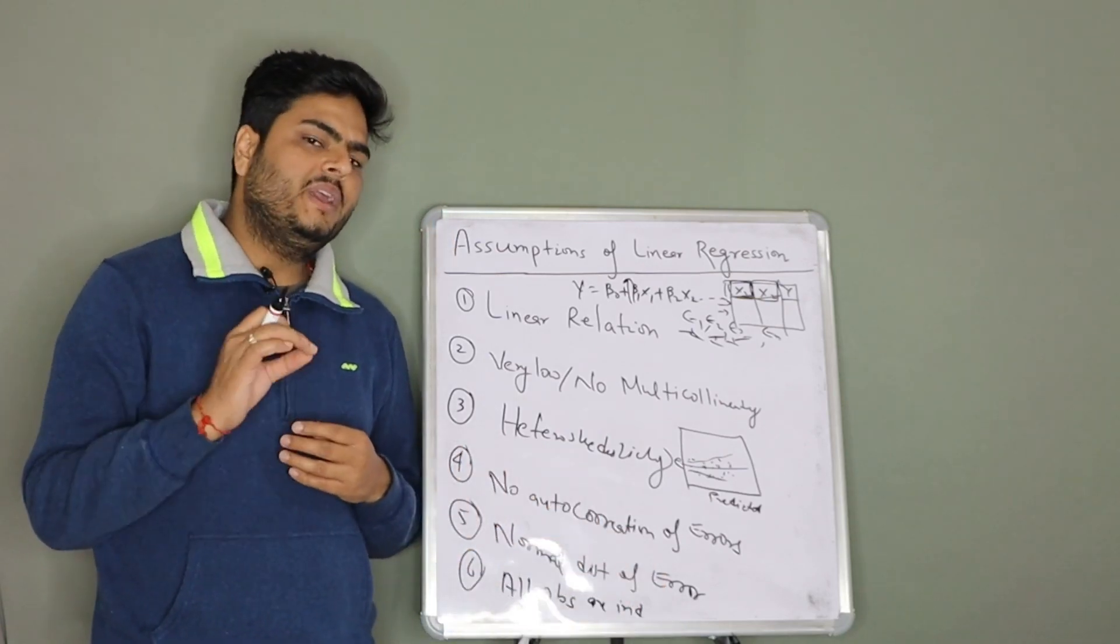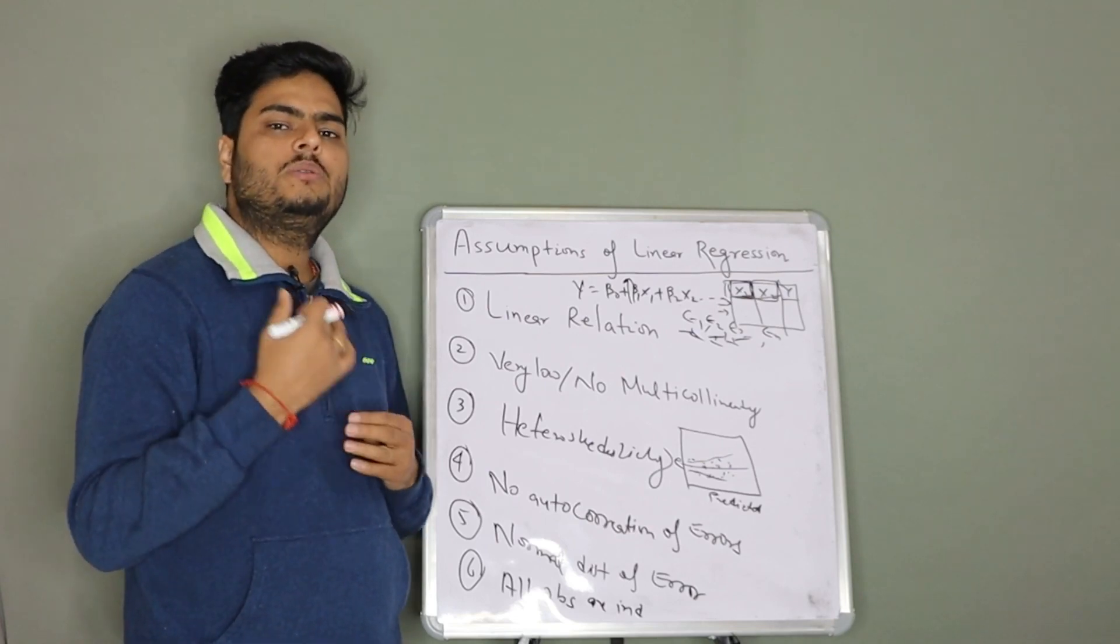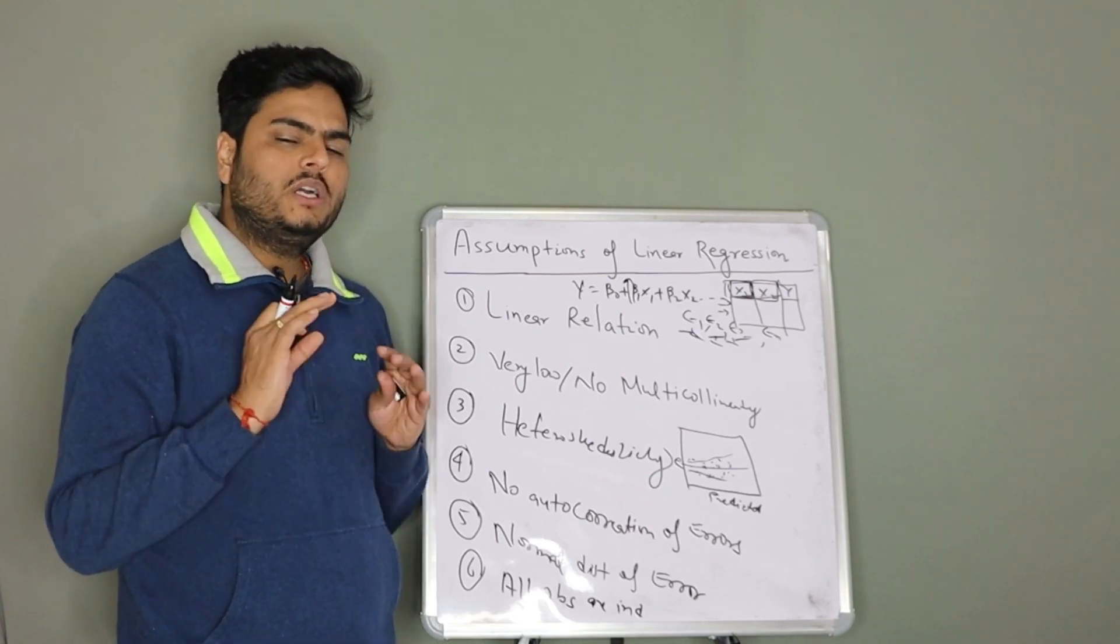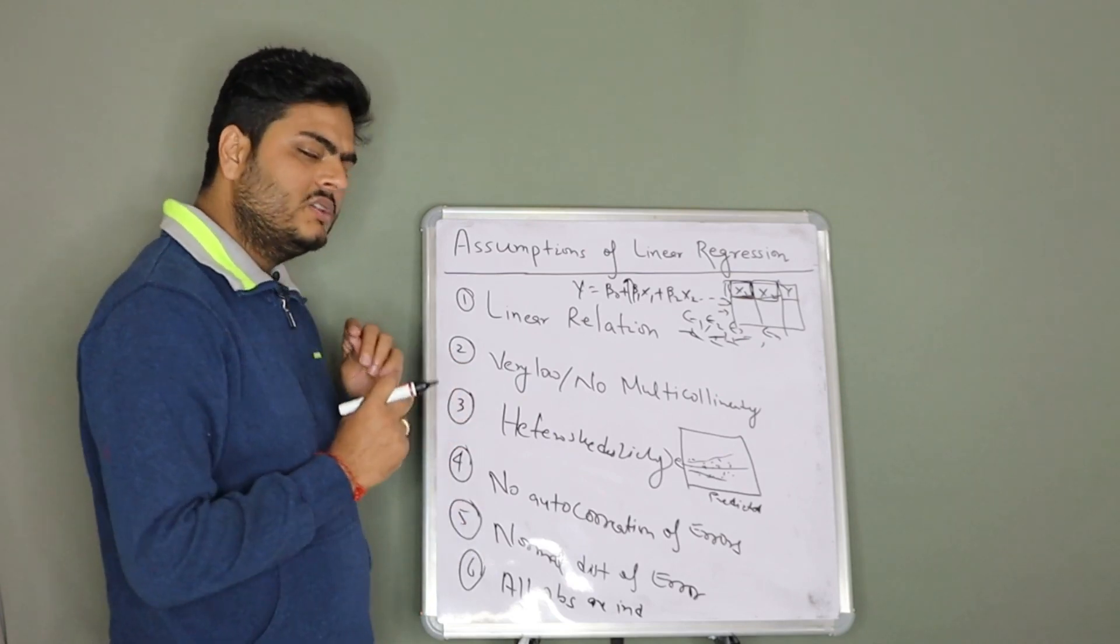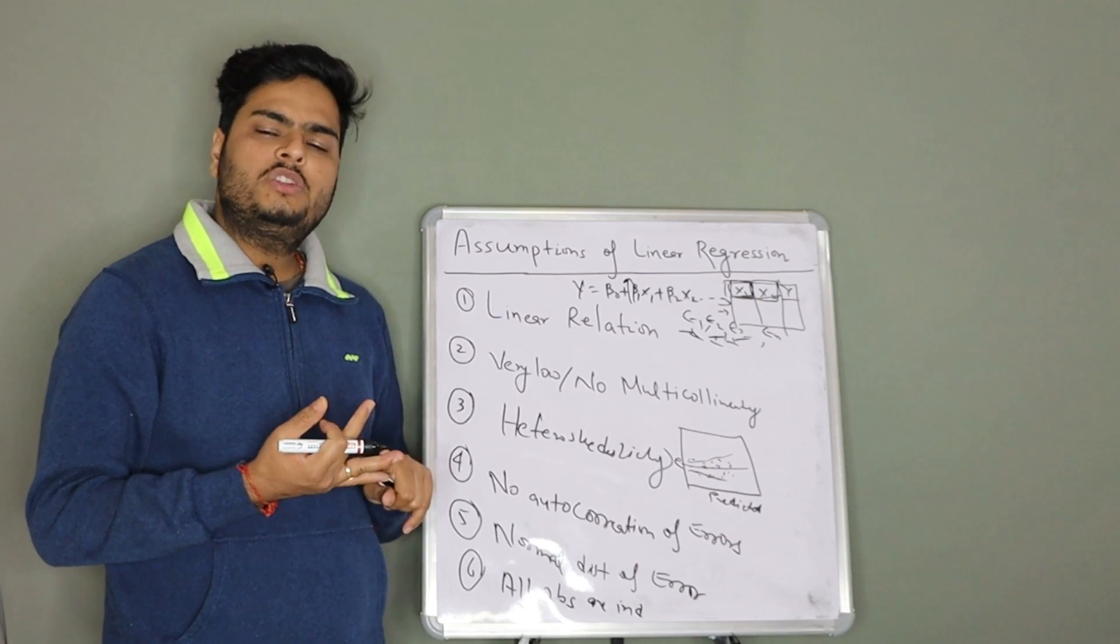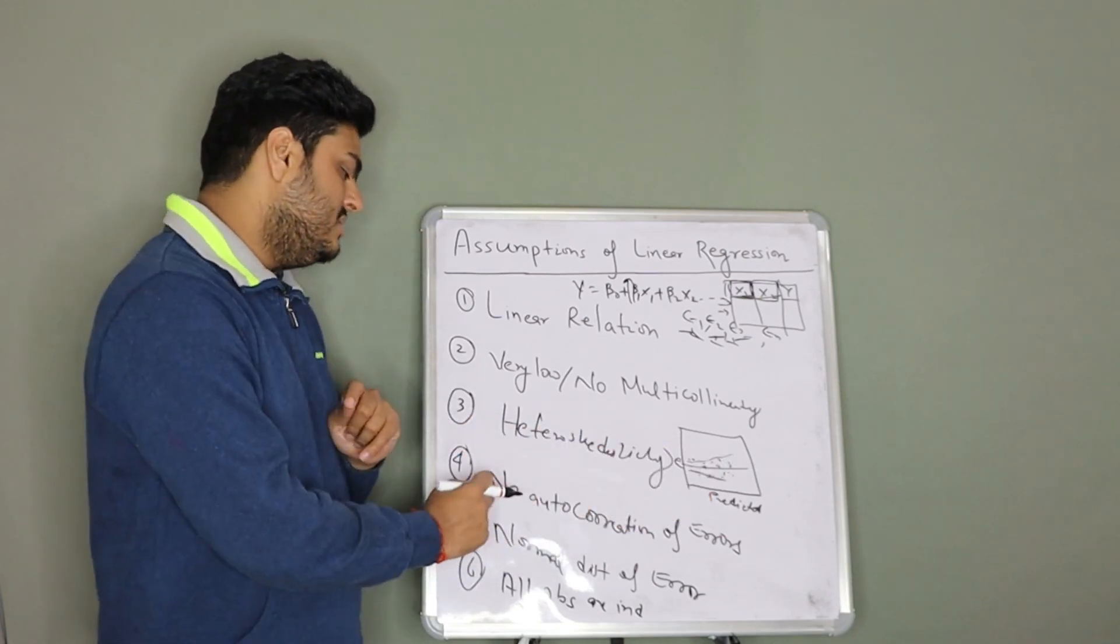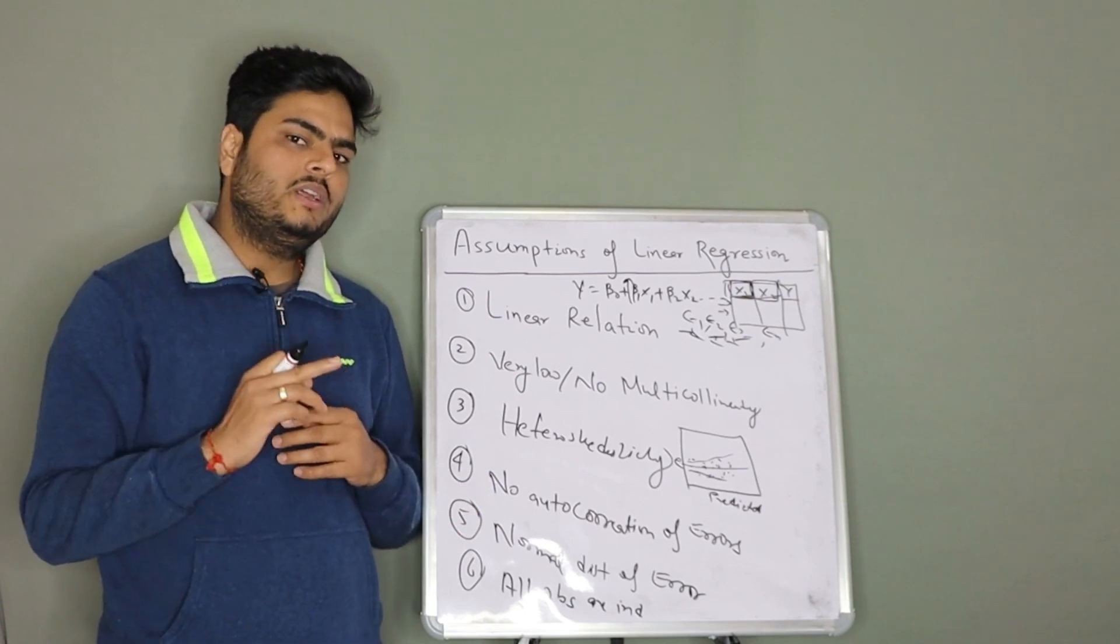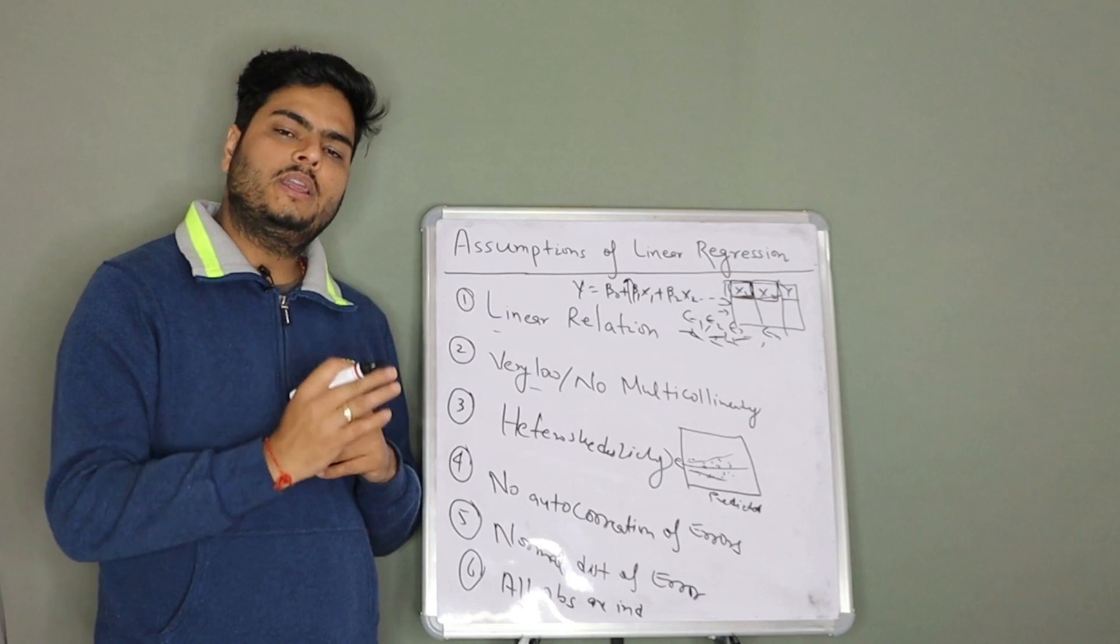These are the five or six main assumptions of a linear regression that you should talk about when somebody asks you what are the assumptions of basic linear regression models. Three of the assumptions are around errors only: errors should be normally distributed, should not be heteroscedasticity phenomenon, and no autocorrelation between the errors, no multicollinearity, and then linear relation between your target and predictors.